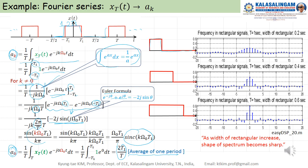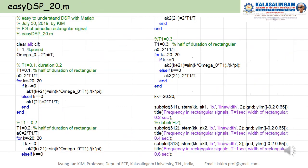We have obtained a_k. For example, looking at the spectrum: as the width of the rectangular pulse increases, the height of the spectral envelope changes — the heights at different harmonics are approximately 4.5, 4.4, 4.6 — meaning the shape of the spectrum becomes sharper. As the width keeps increasing, the shape of the spectrum becomes increasingly sharp.